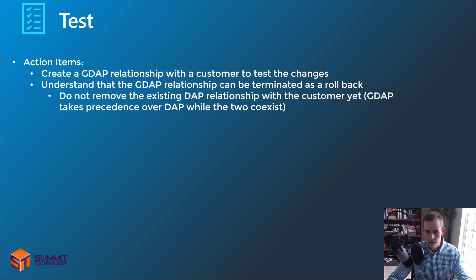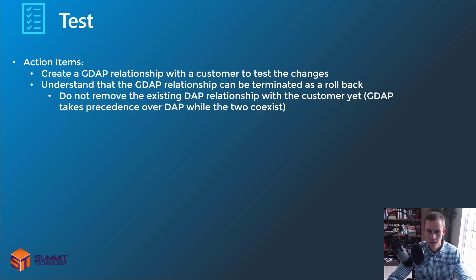The next thing you want to do is some testing. We don't want to just bulk migrate everybody into GDAP and figure out what happens after that. After we've determined our roles, we want to slowly roll this out and document any particular use cases where we need to potentially modify our security groups and Azure AD roles. You want to create a GDAP relationship manually with a customer that has a medium level of support cases so you can get good test data and feedback from technicians about the levels of access they have and any constraints that may require changes.